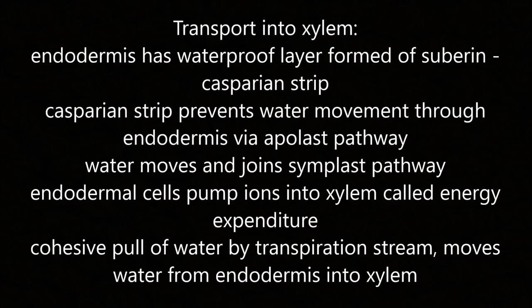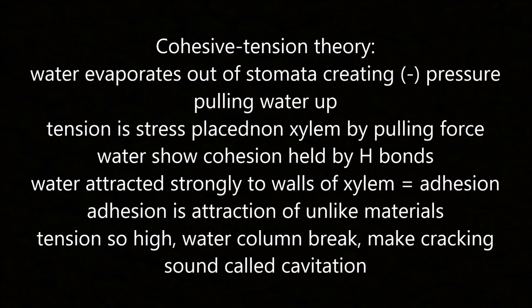Transport into the xylem: the endodermis has a waterproof layer of suberin called the Casparian strip, which prevents water movement through the endodermis via the apoplast pathway. Water is forced into the symplast pathway. Endodermal cells pump ions into the xylem — this requires energy expenditure. The cohesive pull of water by the transpiration stream moves water from the endodermis into the xylem.